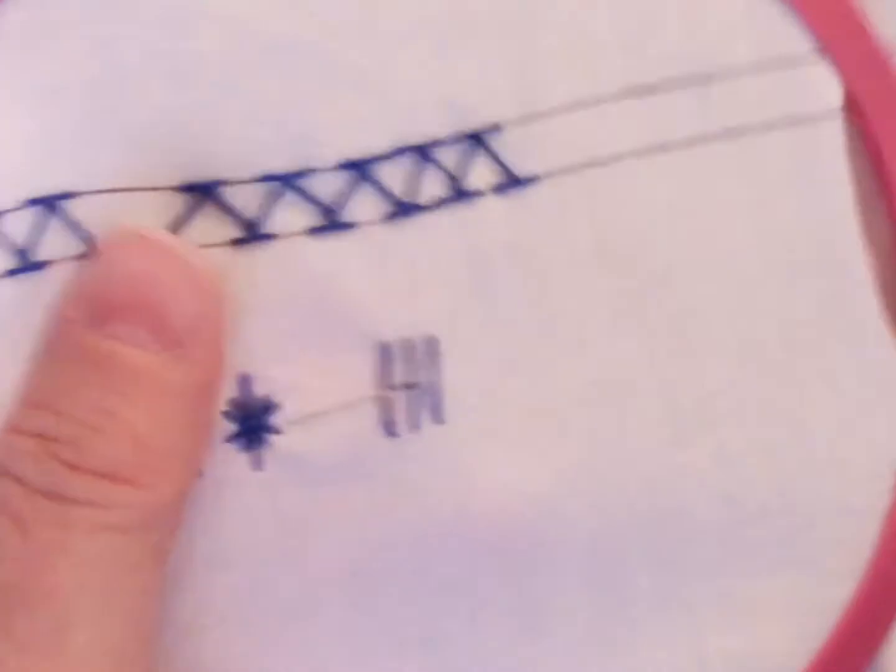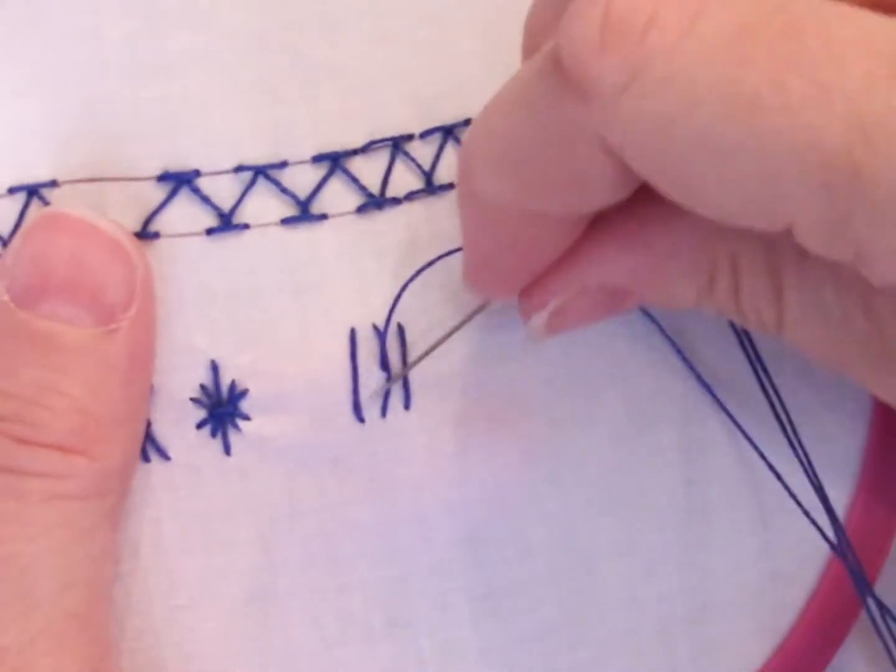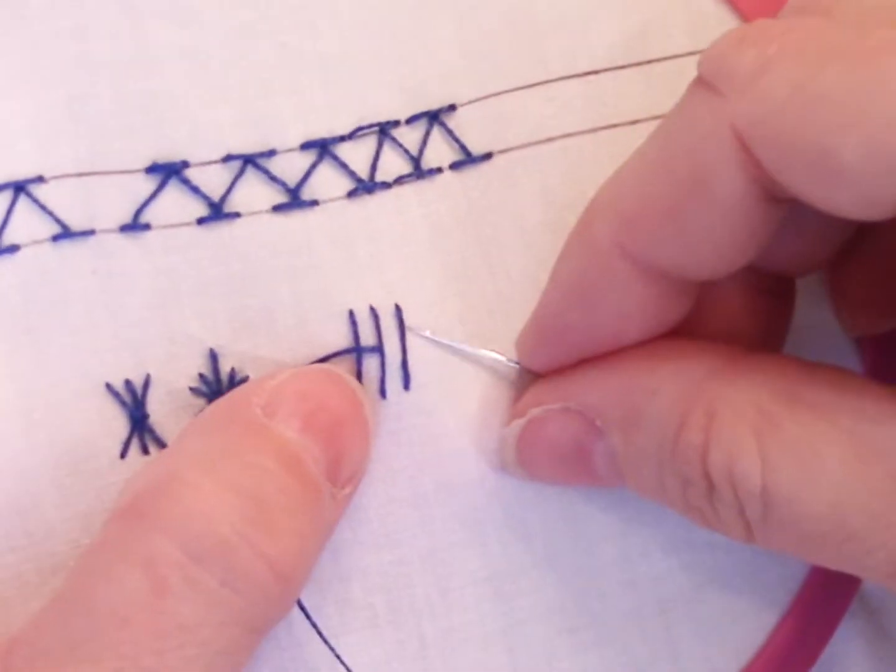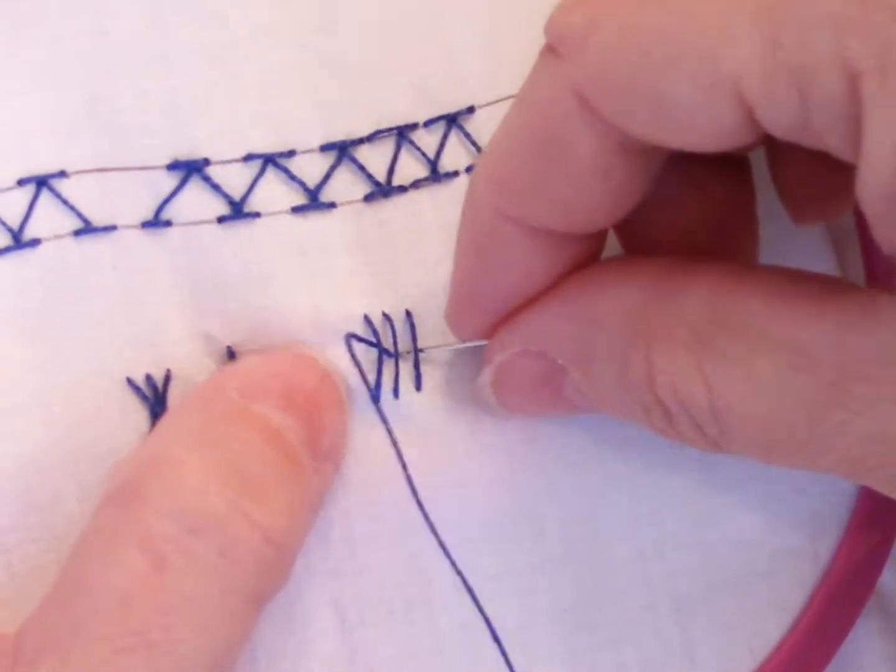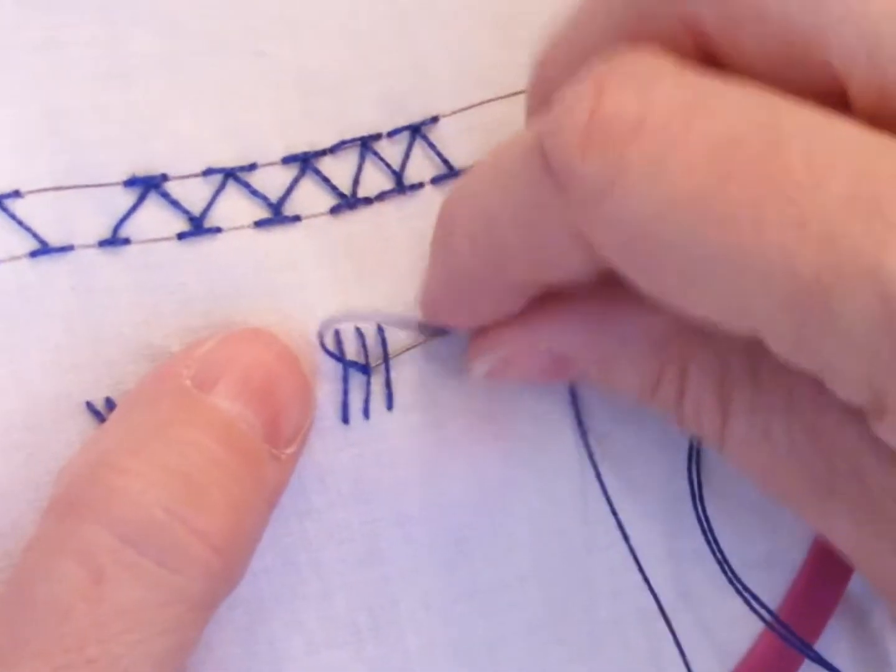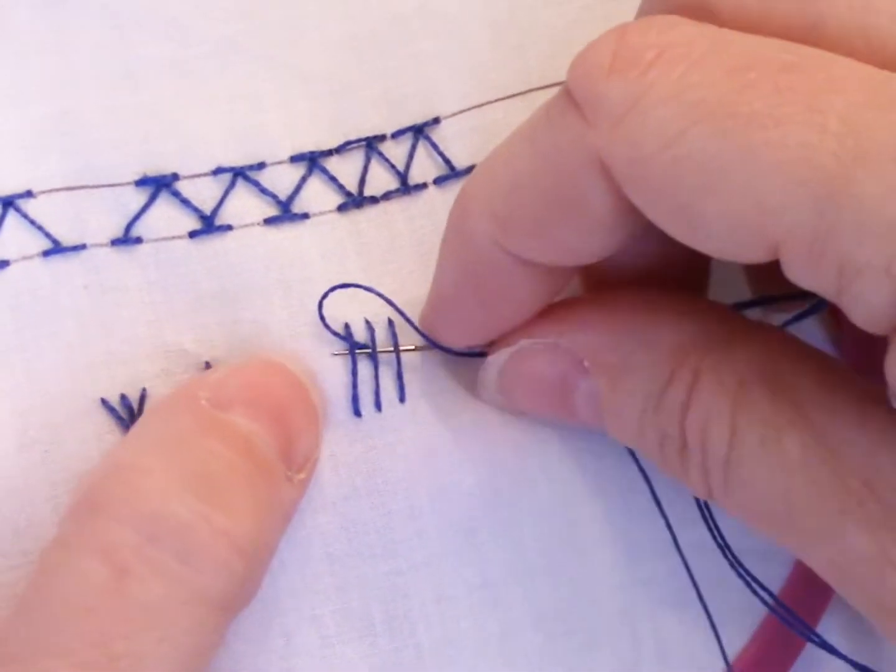Slide it under one of the outside stitches, then the other outside stitch. Then you can come back down in the center. You're just pulling them up like this, or you can wrap it around those three stitches more than once.